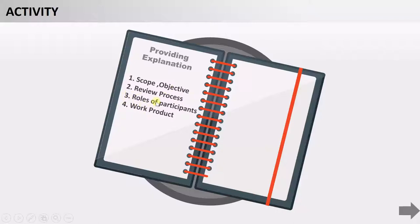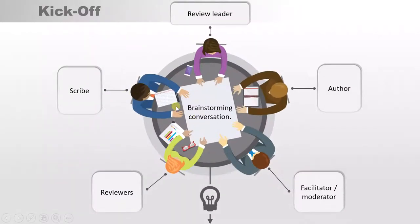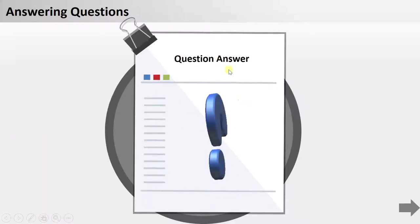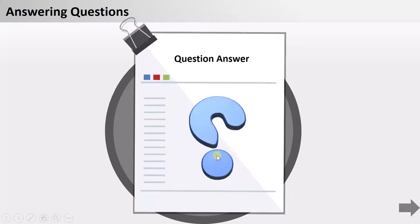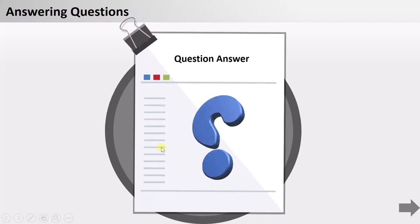The third point covered in explanation is the roles of the participants — there will be different people and each will have a certain role, which will be explained to them. Obviously the work product is also discussed — what they are going to review, what things are there, what the priority is. Apart from distributing documents and explanation, if any participants have questions, those are also answered during the kickoff meeting. That is the advantage of this kickoff meeting, and it is done just before we start the review process.